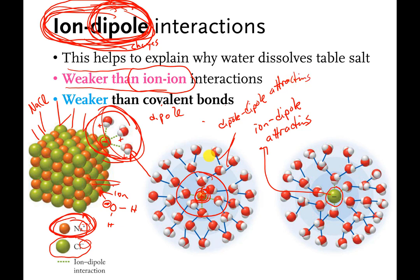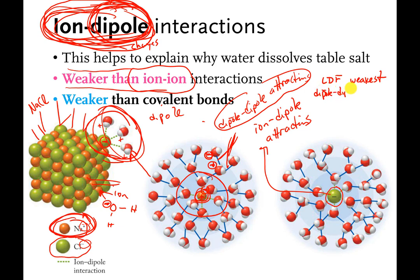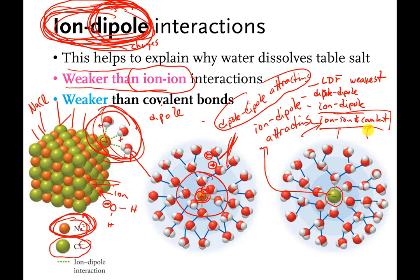The blue lines shown here are called dipole-dipole attractions. There's a partial negative charge on the oxygen from a water molecule, and if it bumps into a neighboring water molecule, there will be an attraction between the partial negative of one water molecule and the partial positive of a different water molecule bouncing around nearby. That's a dipole-dipole attraction, and it's even weaker than ion-dipole. Ranking them: LDF is the weakest, then dipole-dipole, then ion-dipole. Ion-ion and covalent bonds are basically the strongest — which of those two is stronger depends on the situation.